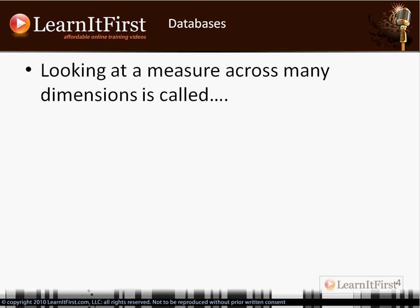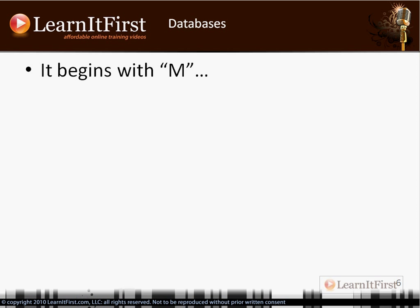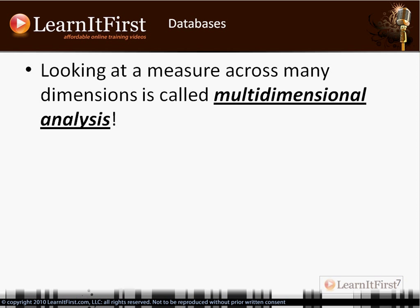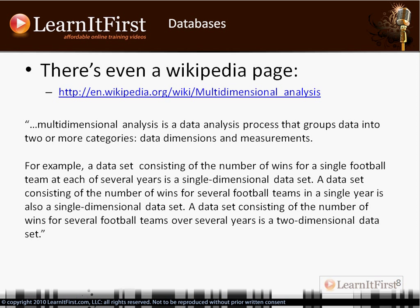What is it called when we look at a measure across several dimensions? It starts with an M — it's multidimensional analysis. When your users want to look at something across two or more dimensions, this is multidimensional analysis. In fact, there's even a Wikipedia page, as this is a common mathematical need to look at statistical numbers in a multidimensional matrix.